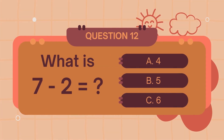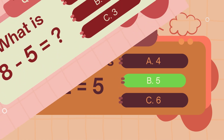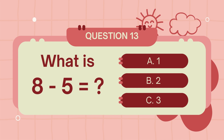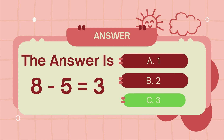What is 7 minus 2? The answer is 5. The answer is 3.